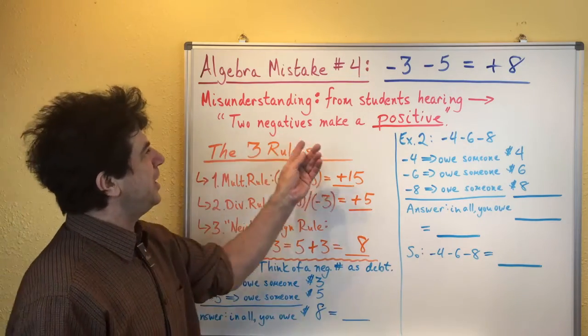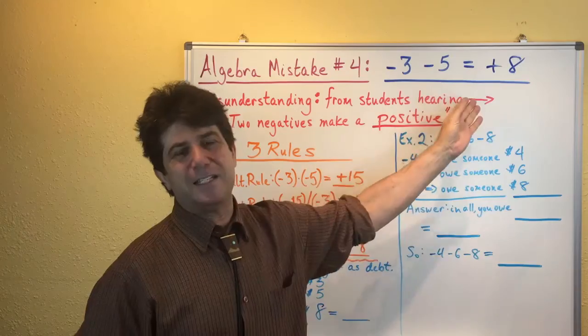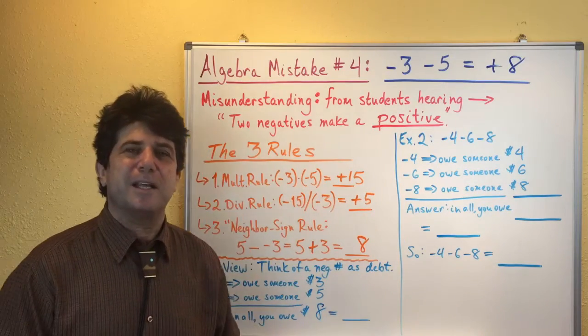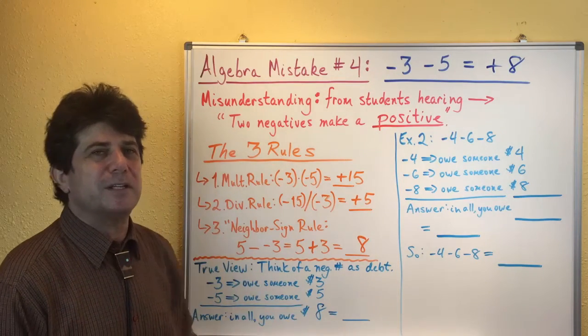So you've got three cases where two negatives do make a positive. Unfortunately, that is not the case here. I wish it were otherwise, but that's just the way math and logic works. So we have to figure out a better way to think about this.